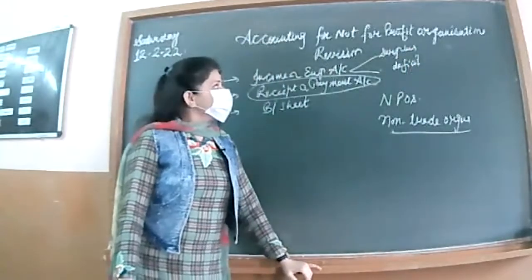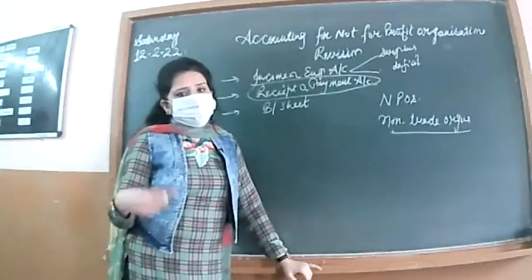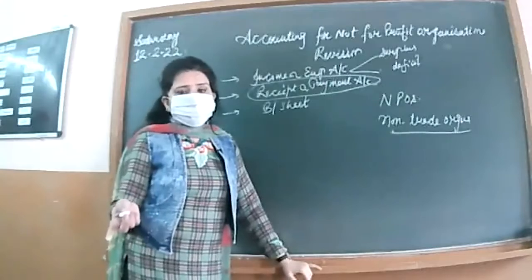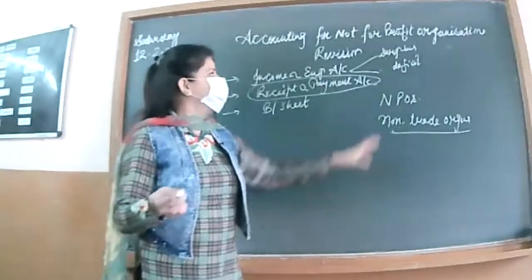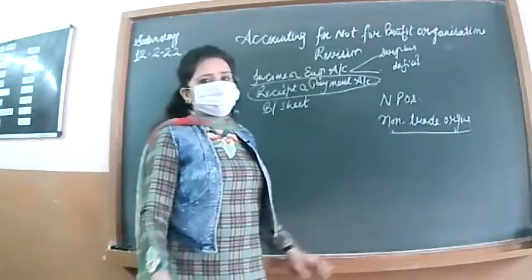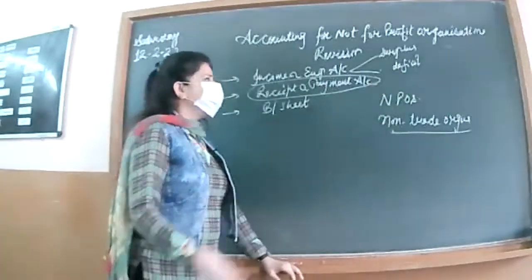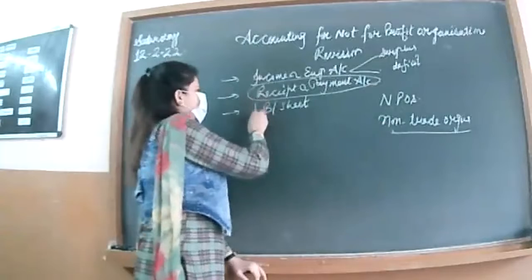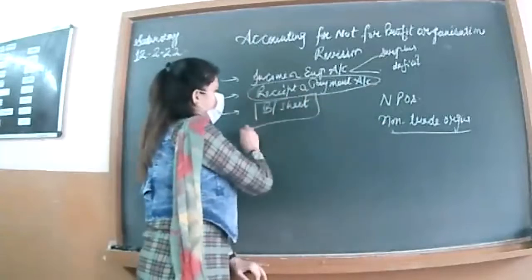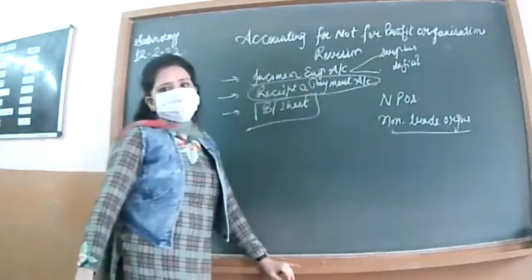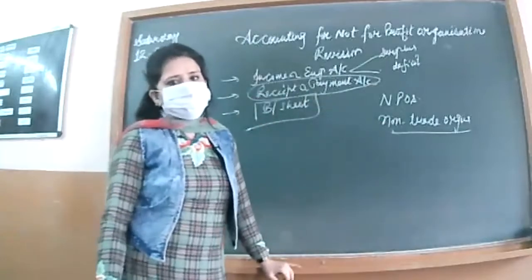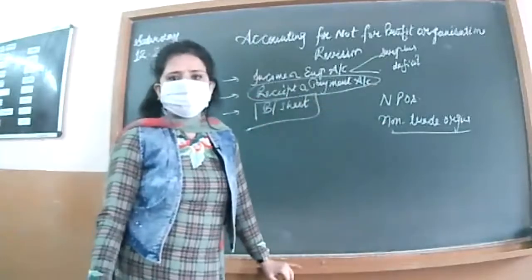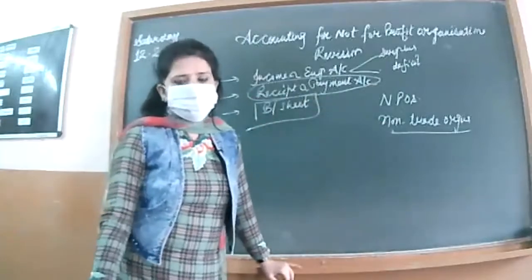Surplus will arise when your credit side is more than your debit side, and the reverse gives deficit as the balancing figure. The balance sheet can also be asked — four marks in Income and Expenditure Account and two marks in the balance sheet.